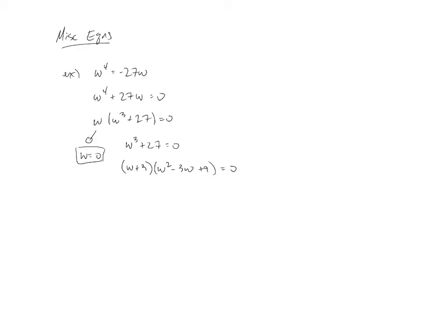so this will factor into the binomial w plus three and the trinomial w squared minus three w plus nine. Once again, we want to make sure we have it set equal to zero. So two factors set equal to zero. This gives us w equals negative three. So now we've found two of our four that we needed.